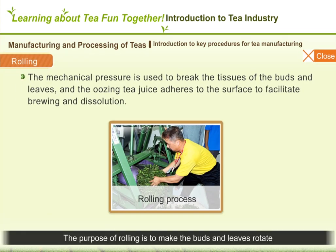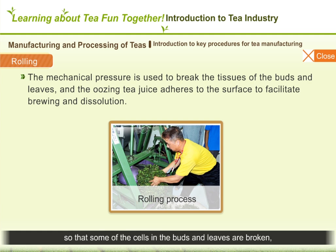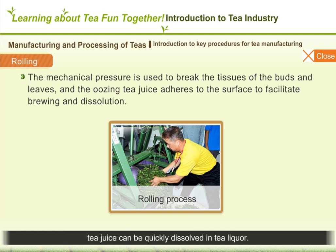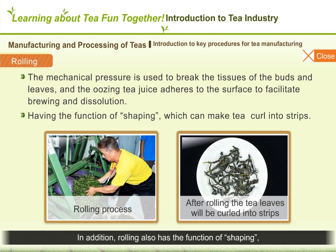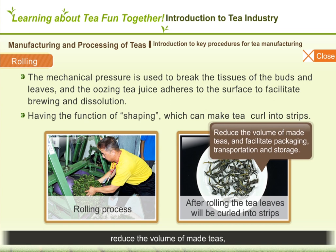The purpose of rolling is to make the buds and leaves rotate and rub against each other by mechanical force, so that some of the cells in the buds and leaves are broken. The tea juice oozes and adheres to the surface, and when the teas are brewed, tea juice can be quickly dissolved into tea liquor. In addition, rolling also has the function of shaping, which can make tea leaves curl into strips, reduce the volume of made teas, and facilitate packaging, transportation, and storage.